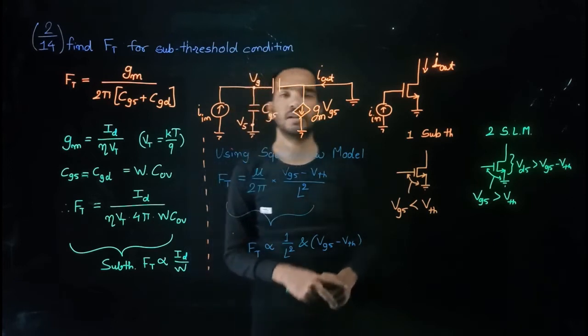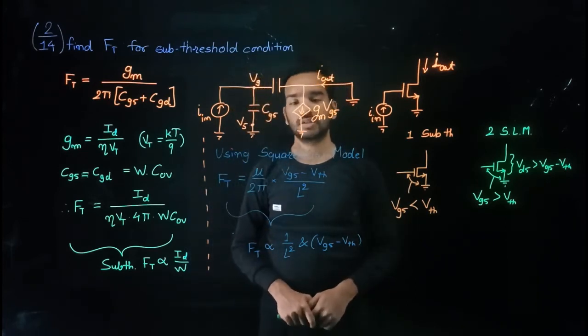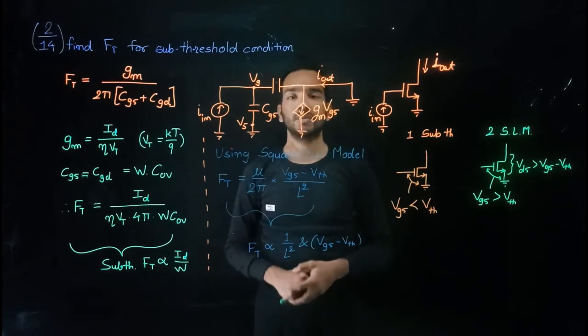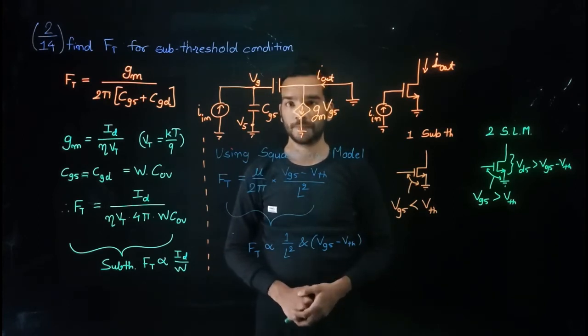Now here is the comparison. When we use square root model and obtain Ft, we already know that Ft was proportional to 1 over L square.